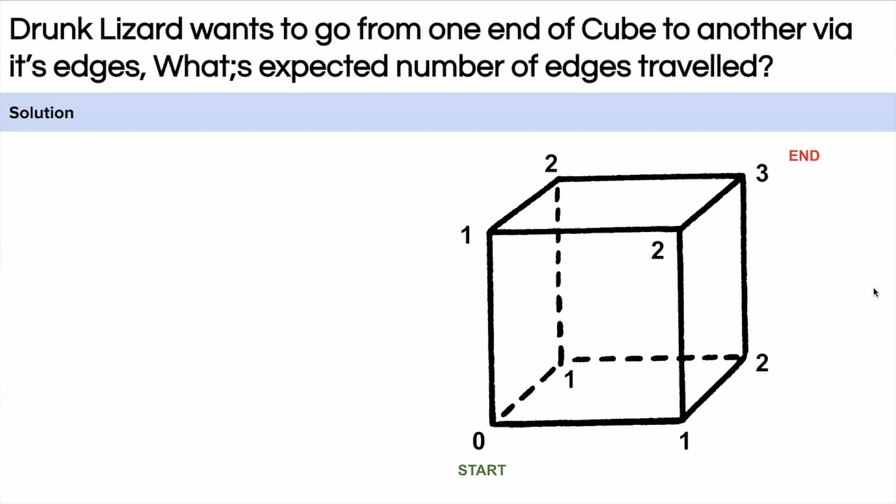So what may happen is that on the first step the lizard can go from zero to one and on the second step it can come from one to zero. So the displacement is zero and it has covered two edges but the displacement is zero.